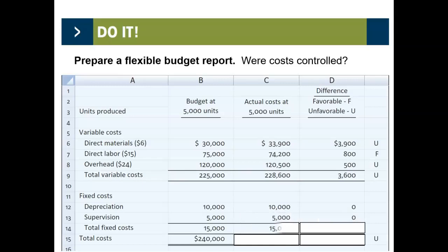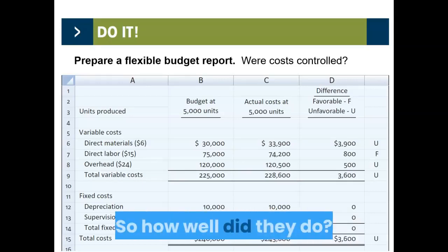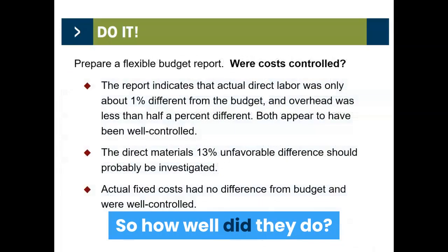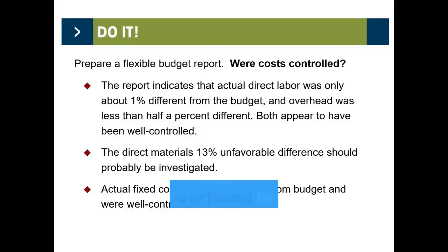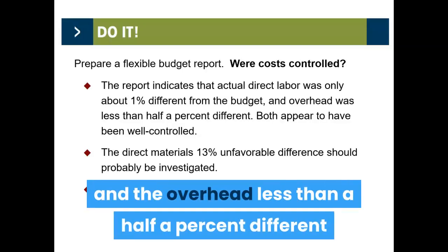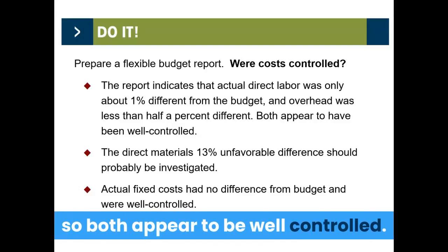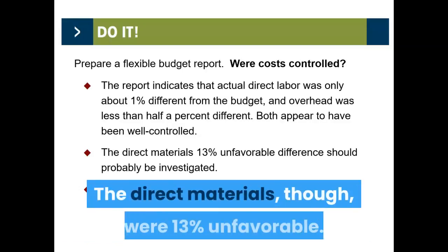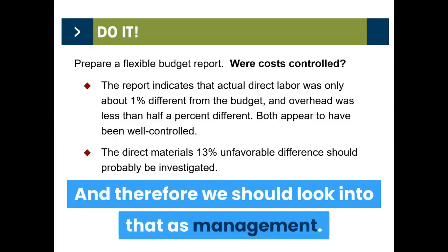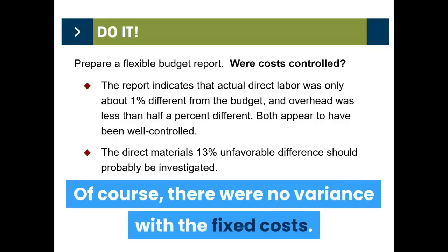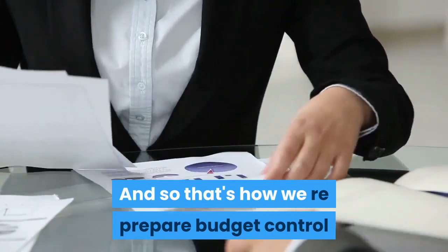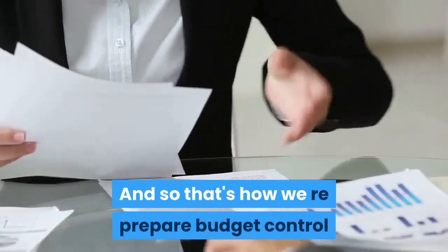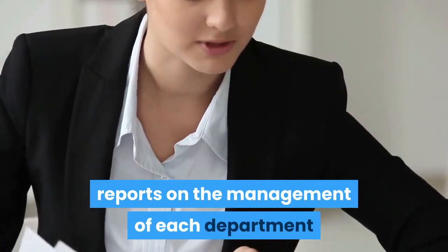The actual direct materials came in at $33,900 — $3,900 unfavorable. Direct labor was $74,800 — $800 favorable. Utilities were unfavorable by $500, giving a total unfavorable variance of $3,600 on variable costs. Fixed costs were all controlled as expected. The report indicates actual direct labor was only about one percent different from budget, and overhead less than half a percent — both appear well controlled. Direct materials, however, were 13% unfavorable, and therefore management should look into that.